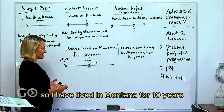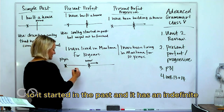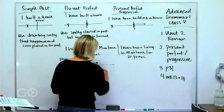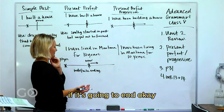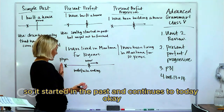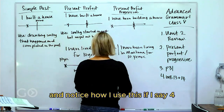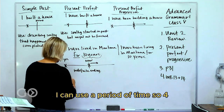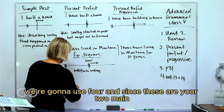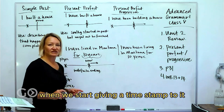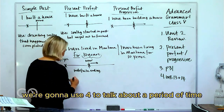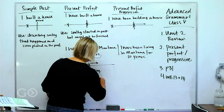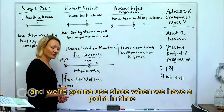So 'I have lived in Montana for 10 years' — it started in the past and has an indefinite ending; we don't know when it's going to end. It started in the past and continues to today. Notice when I give a time stamp, I use 'for' to talk about a period of time, and I use 'since' when I have a point in time.